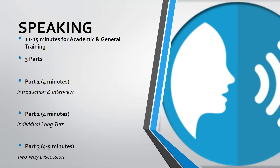For the individual long turn, the IELTS candidate will be given a cue card, a pen, and paper to use during the exam, and you will give a two-minute speech. Part three runs four to five minutes and is a two-way discussion. Part three questions are related to part two but in a more abstract and in-depth manner. Make sure that you have established a good rapport with the examiner.